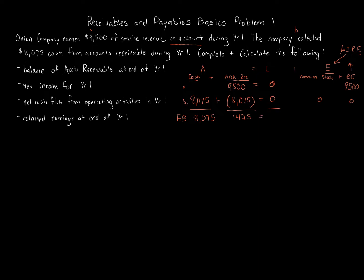The ending balance in liabilities is zero. The ending balance in common stock is zero based on the information given. The ending balance in retained earnings equals $9,500. The accounting equation balances: cash plus accounts receivable equals $9,500, which equals the right side of $9,500. We are in good shape.